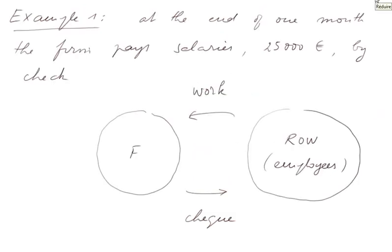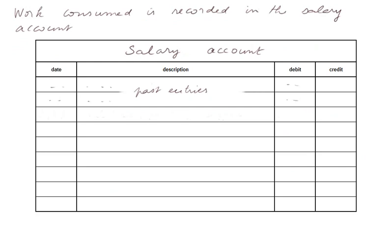Example one. At the end of one month, the firm pays salaries — 25,000 euros — by check. Let's look at the movements of value between the firm and the rest of the world. Work came in during the month before we pay the salaries, and a cheque goes to the employees. Work consumed is recorded into the salary account. So suppose it's September the 30th — salaries paid by cheque. We write debit 25,000 euros. That is a recording not of the payment but of the work coming in and consumed. That's why it's in the debit.